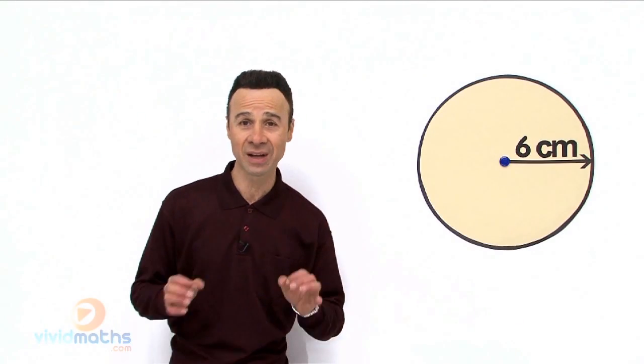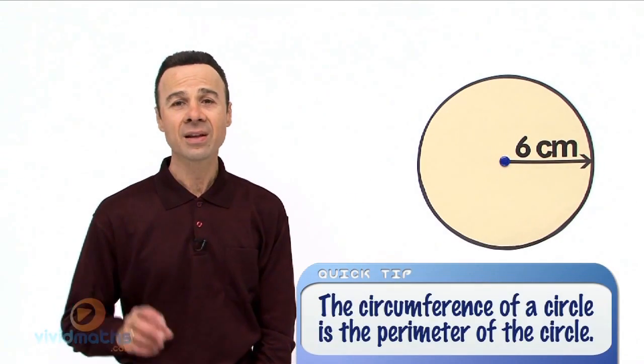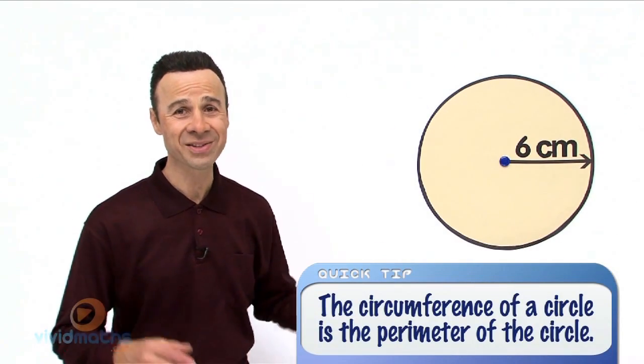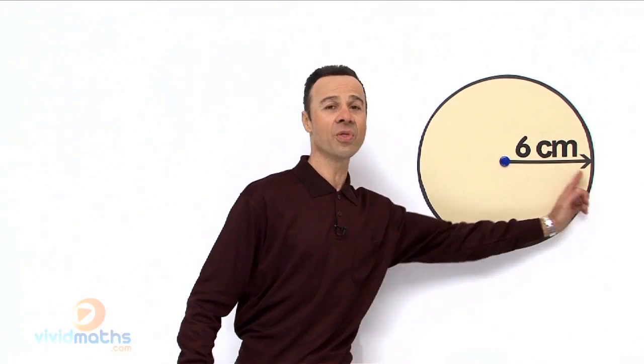We are asked to work out the circumference of this circle. We are given two pieces of information: the diagram which shows a perfect circle, and the radius.